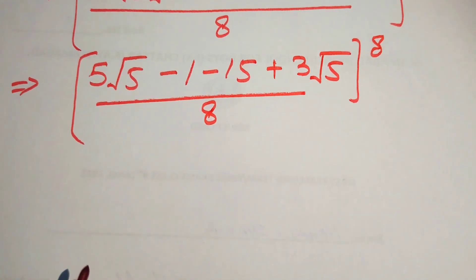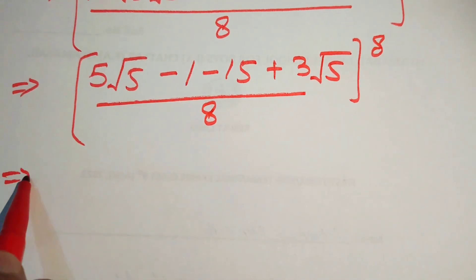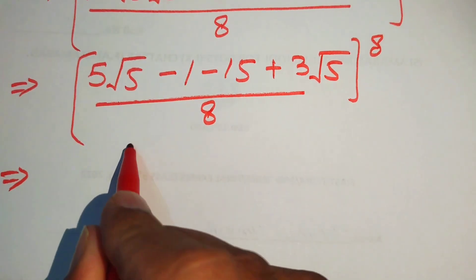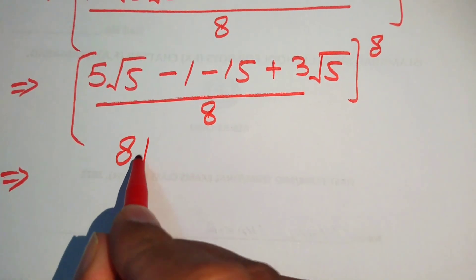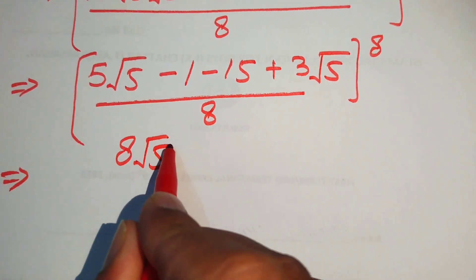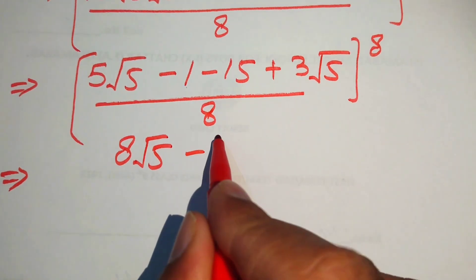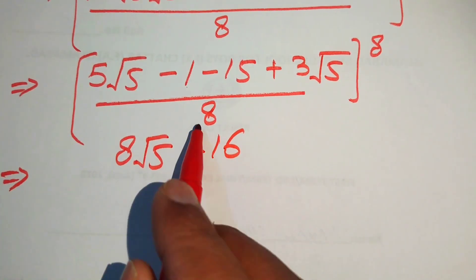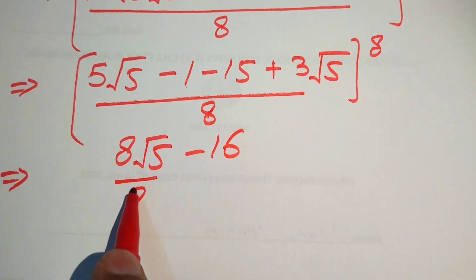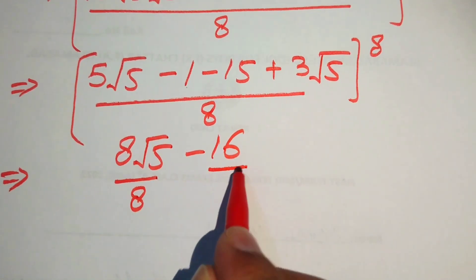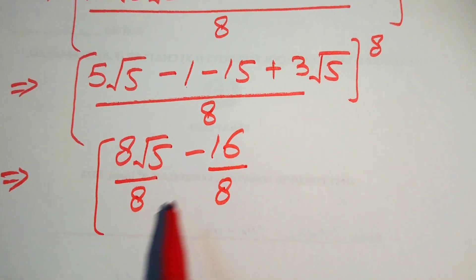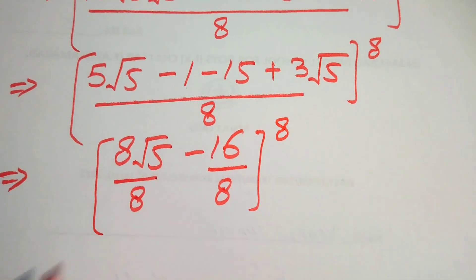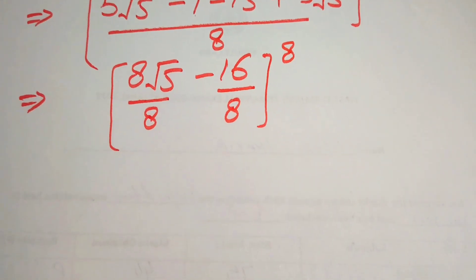In the next step: 5√5 plus 3√5 becomes 8√5, and minus 1 minus 15 is minus 16. We break the fraction, writing it as 8√5 minus 16 over 8, with the whole exponent 8.